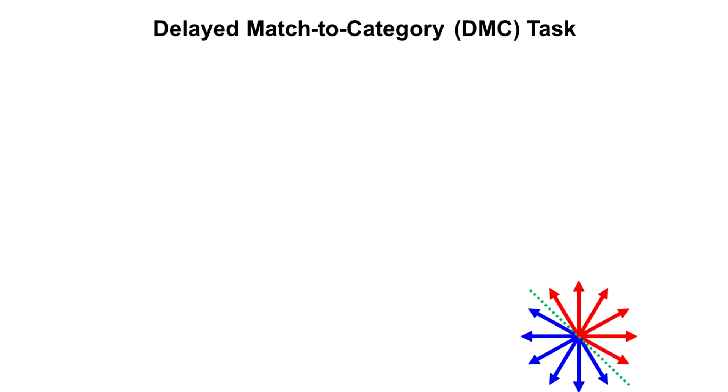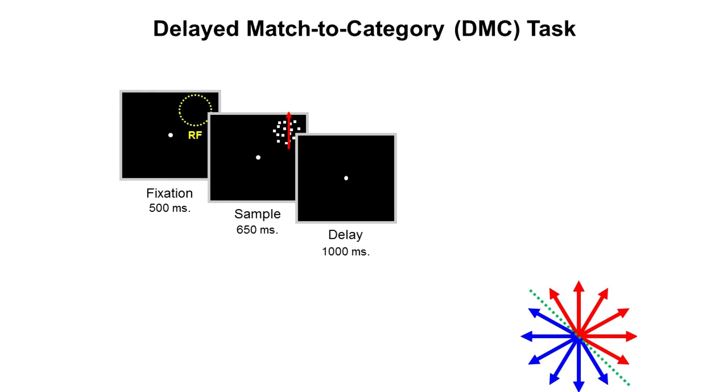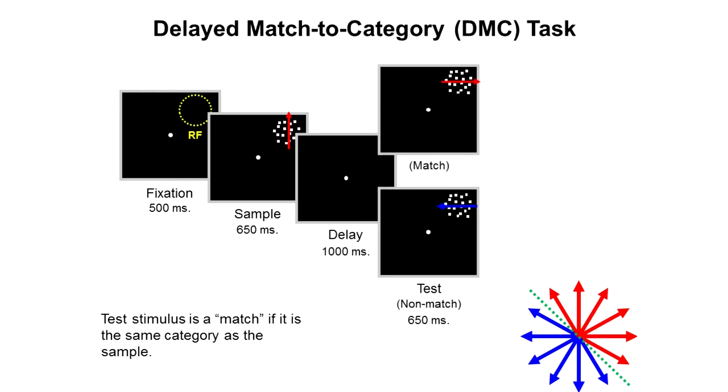During each trial, the monkeys were required to fixate upon a spot on the center of the display while stimuli were presented in the periphery. After fixation was established, a sample stimulus was presented. After a delay, the monkey had to report whether a test stimulus was in the same category as the sample by releasing a lever.